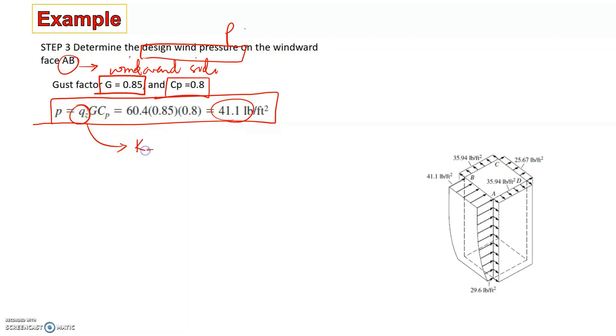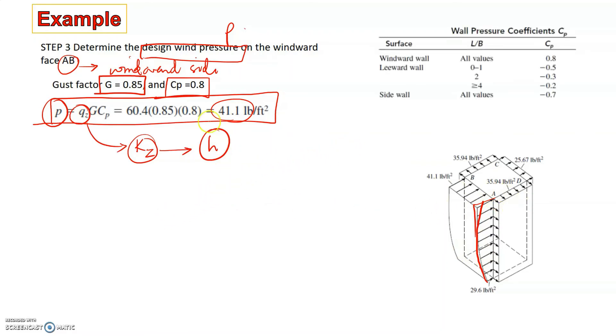Now something that we need to note here is this Qz is dependent upon KZ, which depends upon the height of the structure. So this P varies with the height. That's why we have this variation as we see in this picture. The value of Cp, as I mentioned earlier, is 0.8.